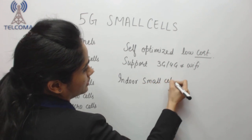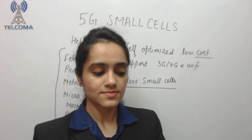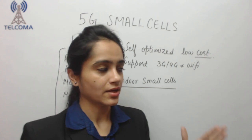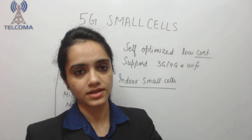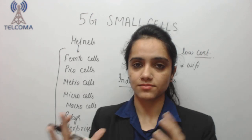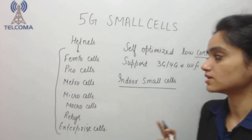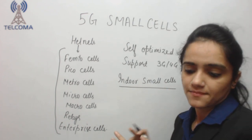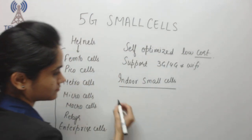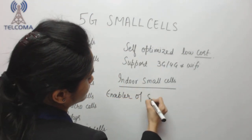We are creating indoor small cells. The reason is that most of the traffic generated nowadays is indoor. If we compare indoor traffic with outdoor traffic, indoor traffic is more. So in order to improve performance, we have to install indoor small cells. The enablers of small cells include ultra self-optimized networks.